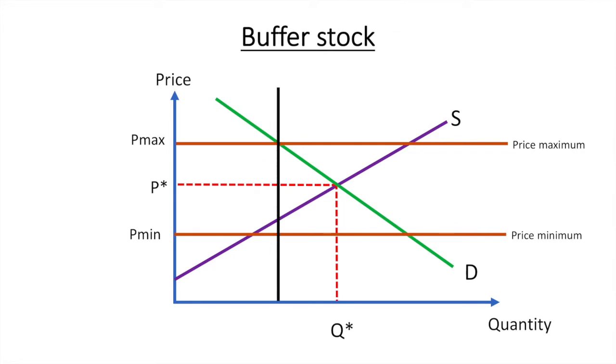Assume that supply is perfectly inelastic in a given time period, let's say a year. Then supply could essentially range from Q1 to Q2 before the government would intervene. At a supply level below Q1, the market price would be higher than the maximum price. And at a supply level greater than Q2, the price would be lower than the price minimum.